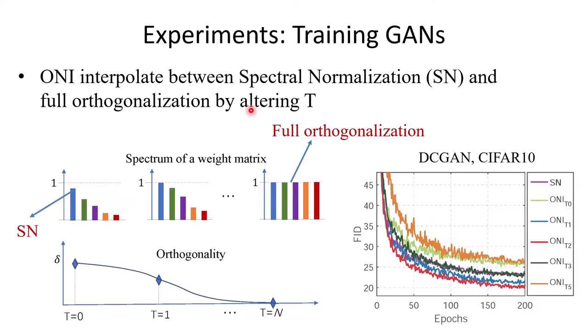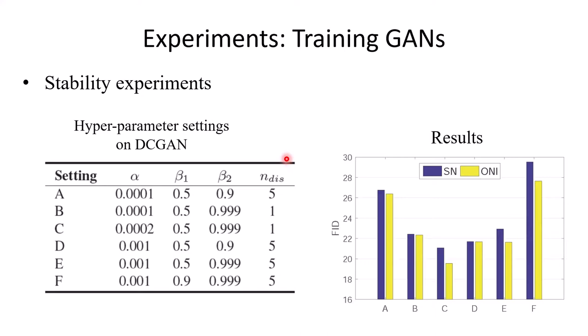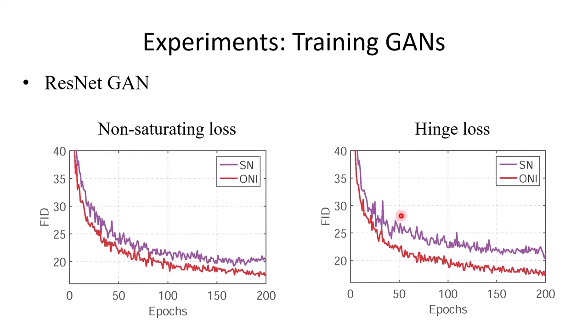It is believed that spectral normalization and orthogonal regularization both are good techniques in stabilizing and improving training of GANs. Our ONI interpolates between spectral normalization and full orthogonalization by changing the iteration number T. We can find that by controlling the orthogonality, our method can achieve better performance than spectral normalization on DCGAN. We also validated the stability of our ONI on different experimental configurations. Our ONI is consistently better than spectral normalization on all the configurations. We also validated the effectiveness of our method on a ResNet GAN with non-saturating loss and hinge loss.